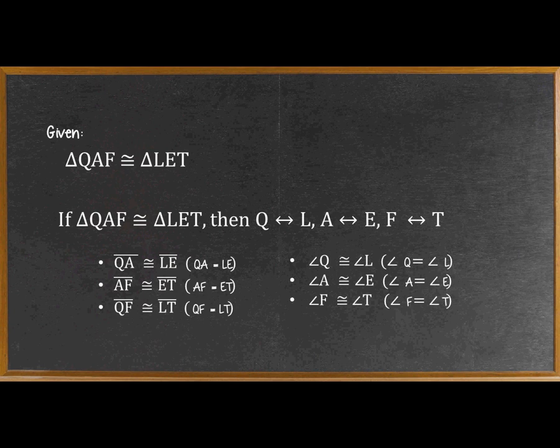This means that side QA is congruent to side LE, so QA equals LE. Side AF is congruent to ET, so AF equals ET. Side QF is congruent to side LT, which means QF equals LT. Same goes for their angles. Angle Q is congruent to angle L, angle A is congruent to angle E, and angle F is congruent to angle T.